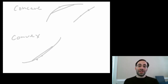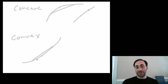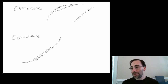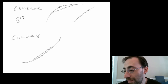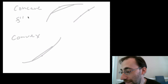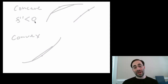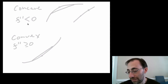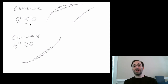We introduced that in the context of calculus for two reasons. One, because you can associate concave and convex with second derivatives. The second derivative being less than zero everywhere means it's a globally concave function. And if the second derivative is greater than or equal to zero everywhere, it's a globally convex function.